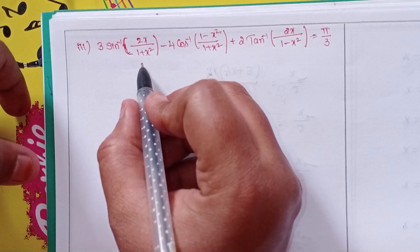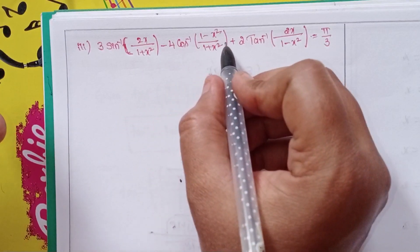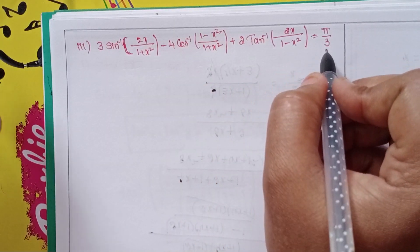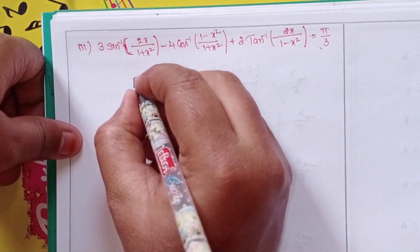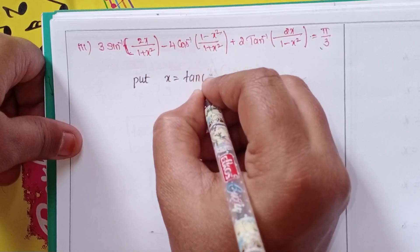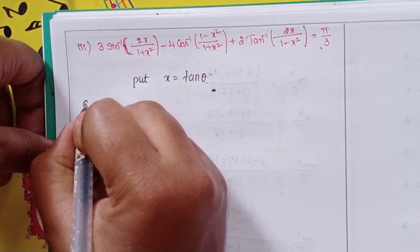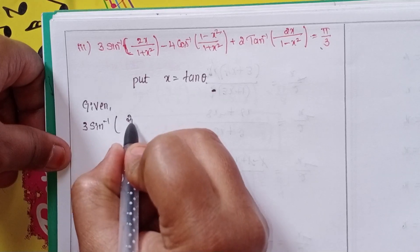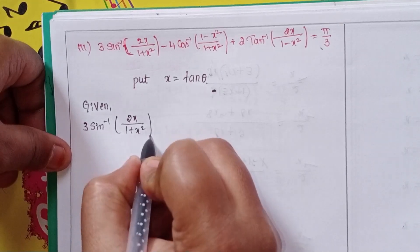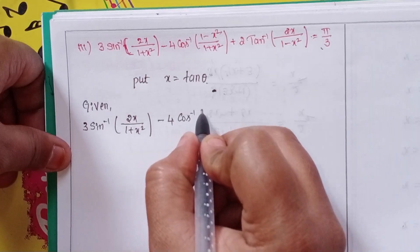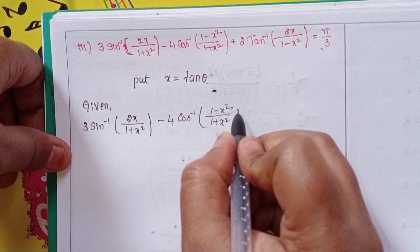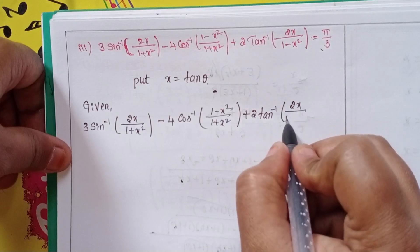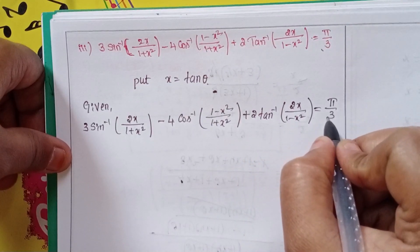Third problem: 3·sin⁻¹(2x/(1+x²)) − 4·cos⁻¹((1−x²)/(1+x²)) + 2·tan⁻¹(2x/(1−x²)) = π/3. Here we substitute x = tan θ.